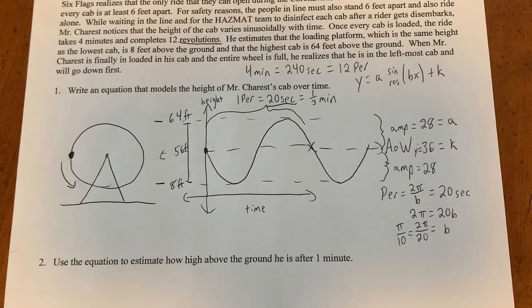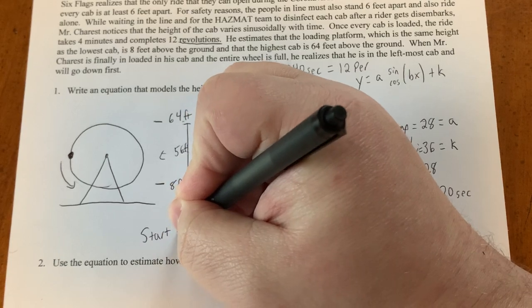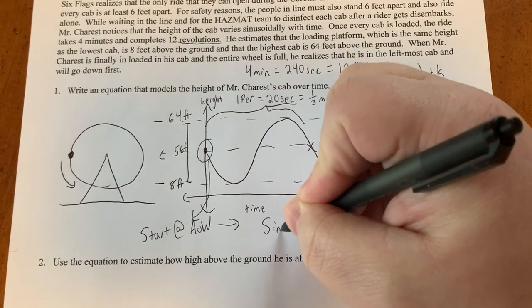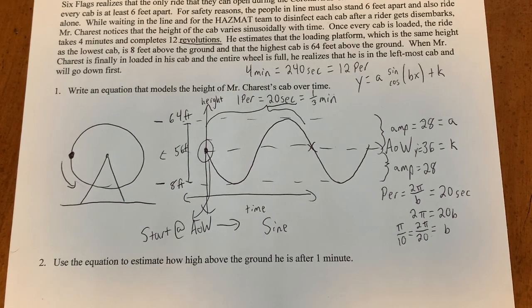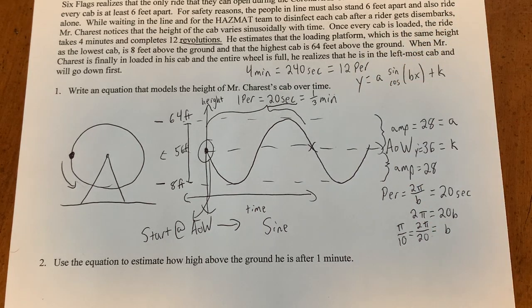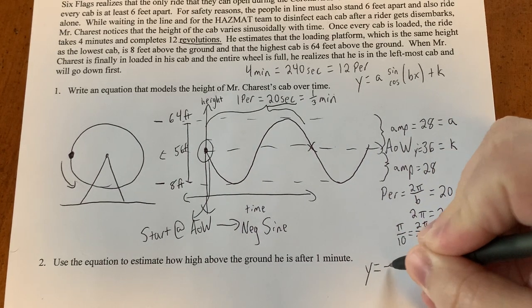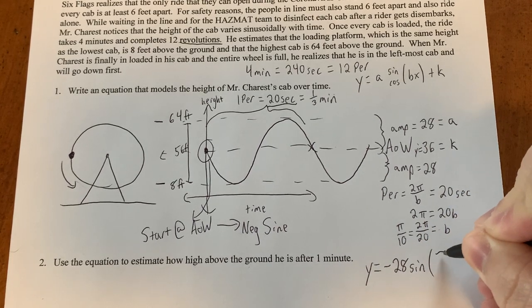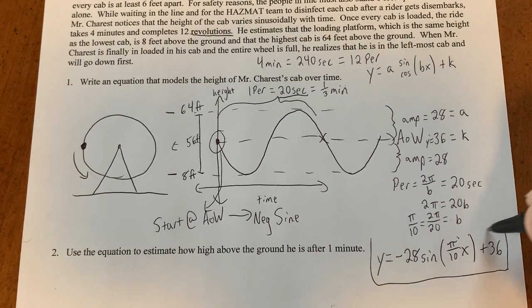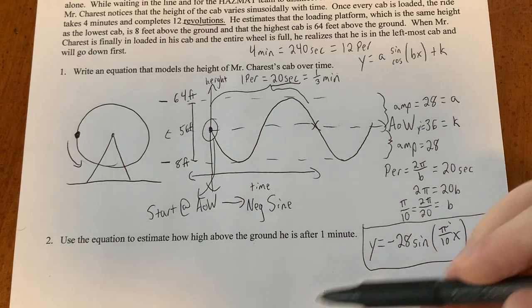Now we just need to figure out if it's sine or cosine and if it's positive or negative. So it starts at the axis of the wave. On the y-axis, it's at the axis of the wave. That means it's a sine. A cosine either starts at a maximum or a minimum. A sine starts at the axis of the wave. And it's going down first. Normally, a sine function goes up first. So it's the opposite. So it's a negative sine. So our function is y equals negative 28 sine of π over 10x plus 36. That equation models the graph. That equation models your height over time.